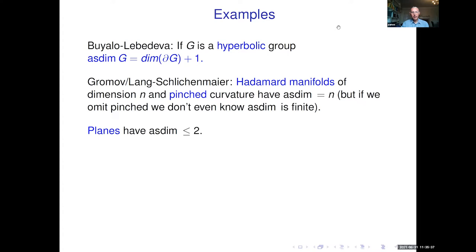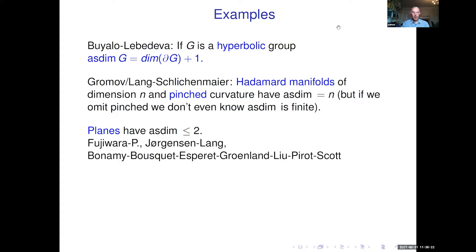There are also results by Gromov and Lang-Schlichenmaier about Hadamard manifolds. Hadamard manifolds of dimension n with pinched curvature give asymptotic dimension exactly equal to n. But without pinched curvature, I don't think we know that the asymptotic dimension is even finite. Another result: planes have asymptotic dimension at most two. Here 'planes' means planar graphs or planes with some Riemannian metric, and we allow any metric — note that in R3 you can construct a metric with infinite asymptotic dimension, for example by embedding a sequence of expanders.